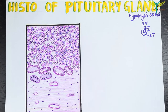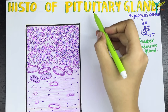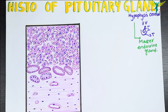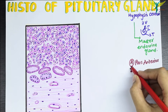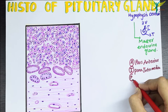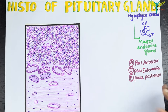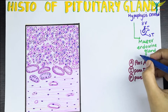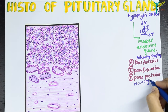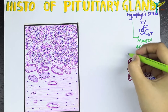The hypophysis cerebri or the pituitary gland is one of the most important endocrine glands. It produces several hormones and is also referred to as the master endocrine gland. The pituitary gland is divided into three parts: the anterior part called pars anterior, the intermediate part called pars intermedia, and the posterior part called pars posterior or pars nervosa. The pars anterior is also called adenohypophysis, whereas the pars posterior is called neurohypophysis.